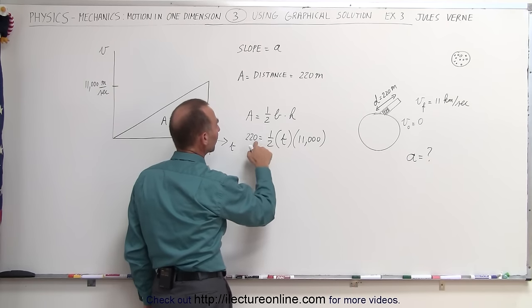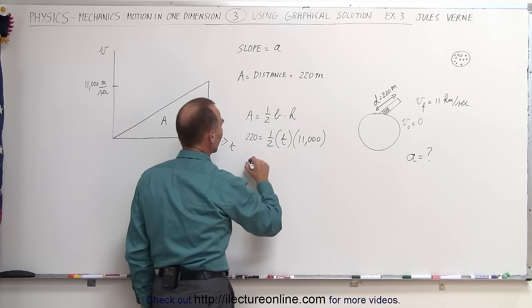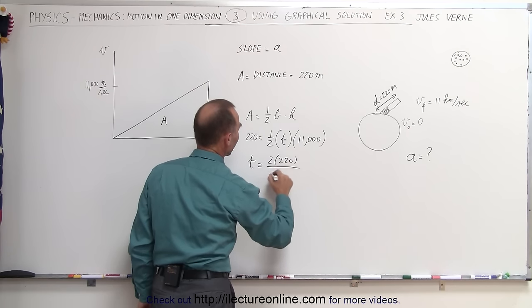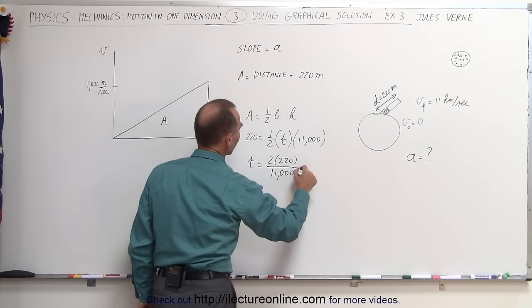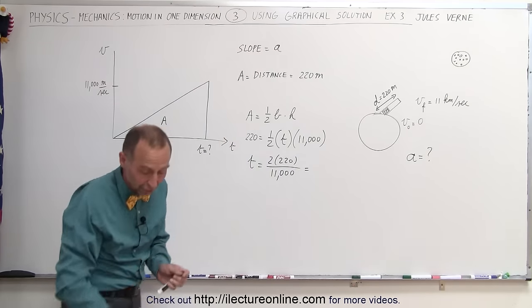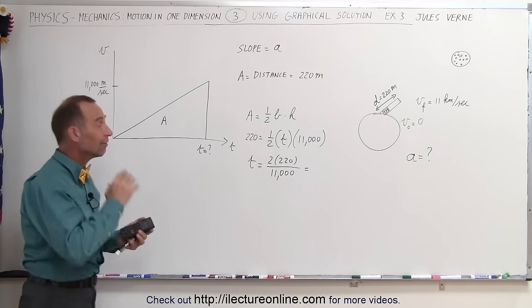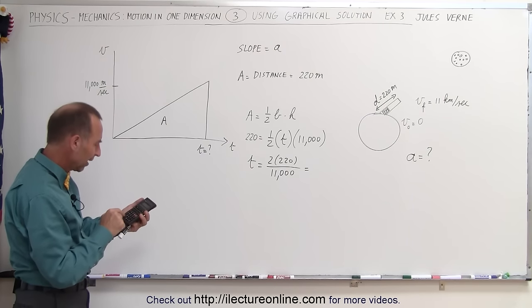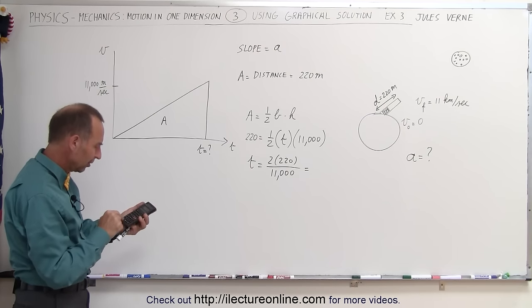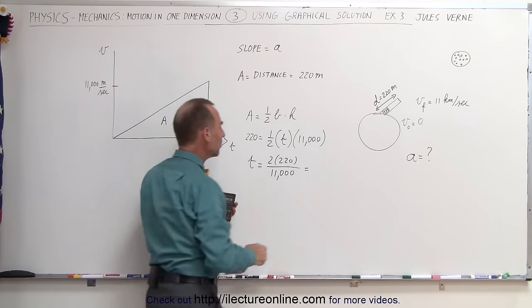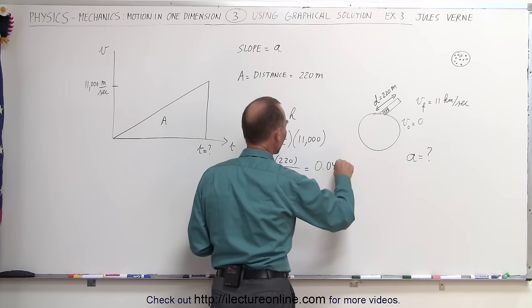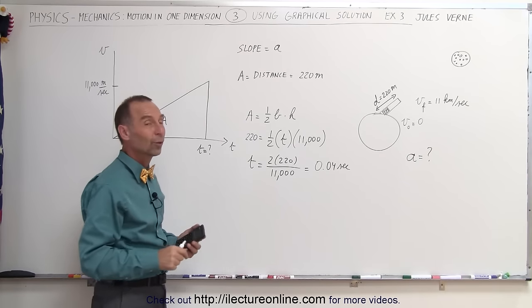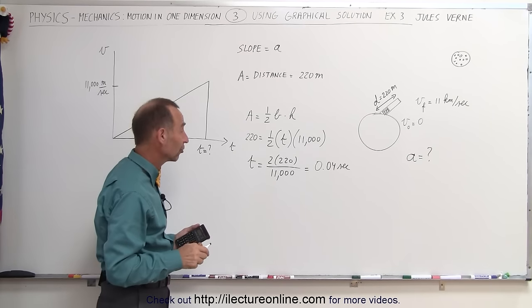Putting the two over and dividing by 11,000, the time equals 2 times 220 divided by 11,000. That's the time it took for the capsule to travel the barrel length. 440 divided by 11,000 gives us 0.04 seconds. Wow, 4 one-hundredths of a second to travel 220 meters - that seems like a bit much.